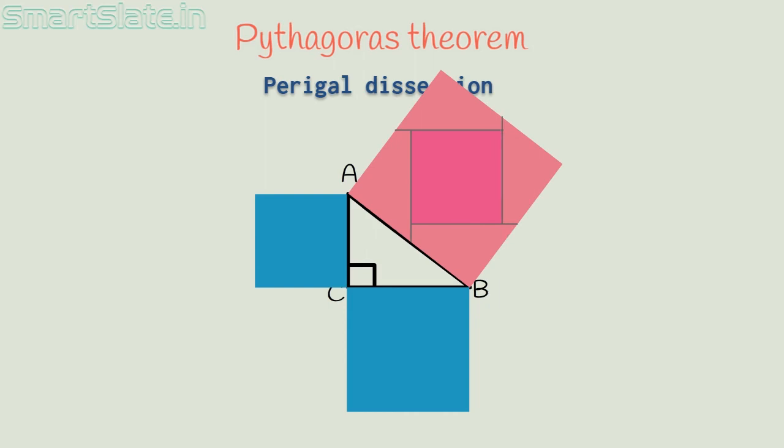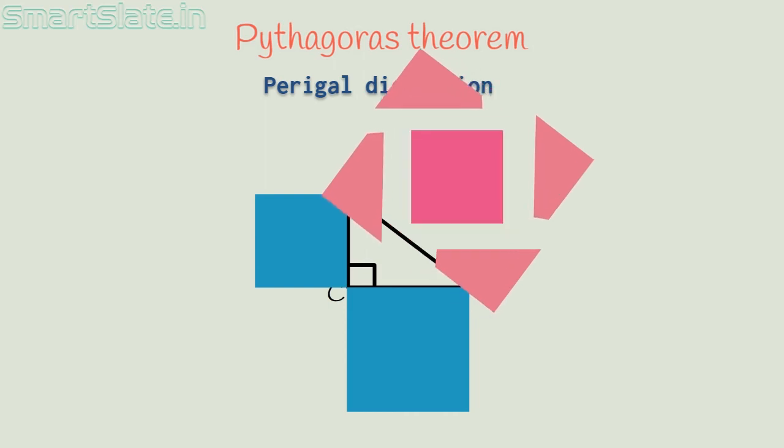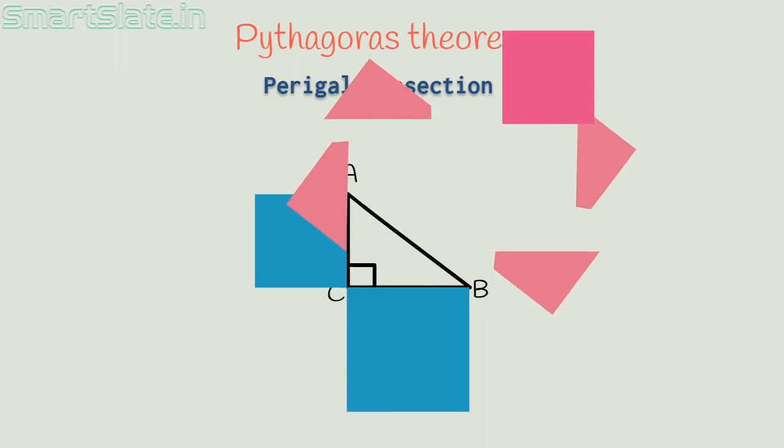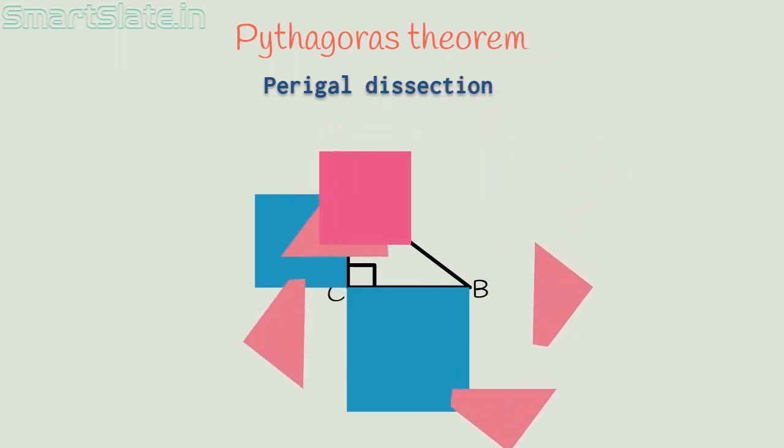Then you can rearrange the pieces. All the pieces in the big square now fit exactly inside the other two squares.